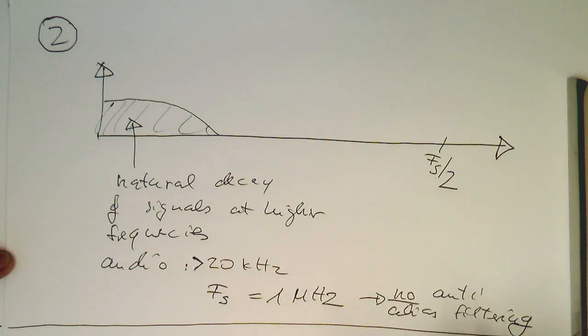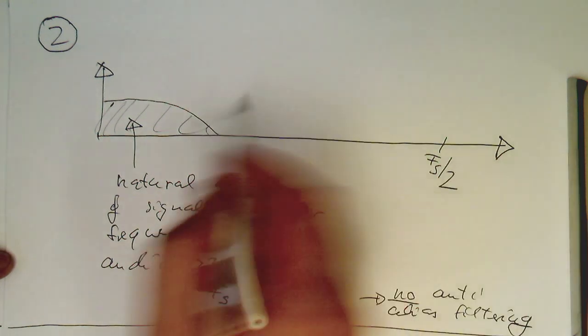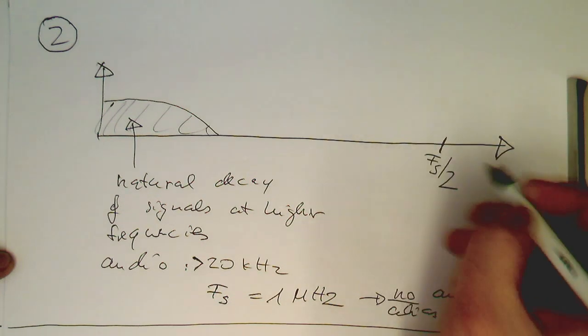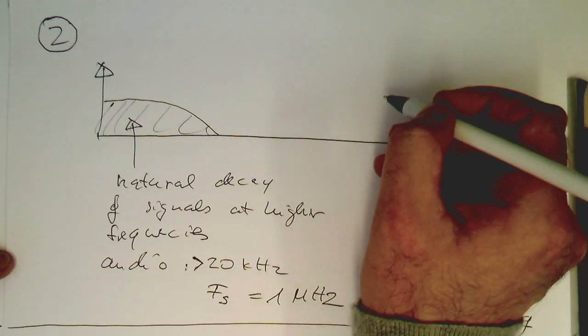No anti-alias filtering. And converters working with this strategy here, with this very wide or very high fs half here, they usually call sigma-delta converters.